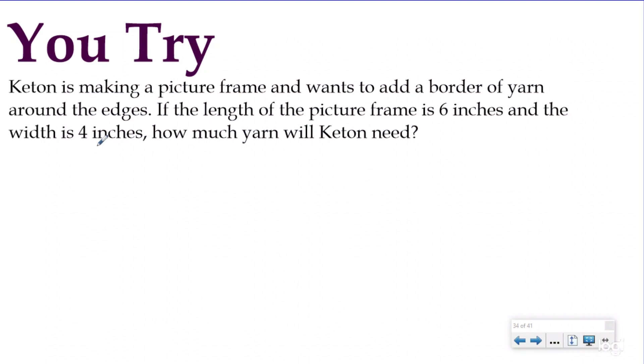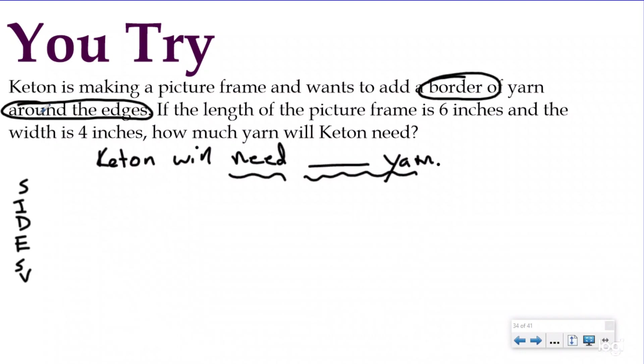Your question says, how much yarn will Keaton need? So I'm going to say, oh, sorry. I'm going to write my steps over here. That way I remember what to do. Got my Sides Check Strategy. My statement's going to say, Keaton will need blank yarn. All right. I'm going to go back. I'm going to look for anything about yarn or anything she might need. So it says Keaton is making a picture frame and wants to add a border of yarn around the edges. So I'm doing a border around the edges of my frame. That clues me into that I'm probably doing perimeter. The length of the picture frame is 6 inches. I'm not identifying this because it's a number. I'm identifying it because I'm putting yarn around the border. So I need to know the length and the width, which is 4 inches. You're not just identifying numbers to identify them. We want you to understand what you're doing.